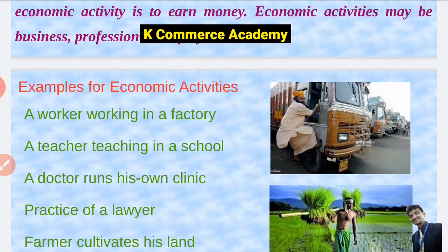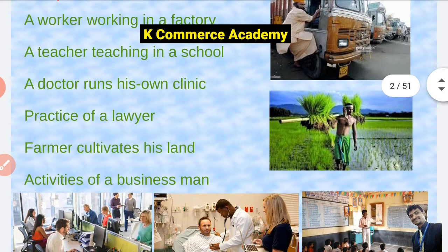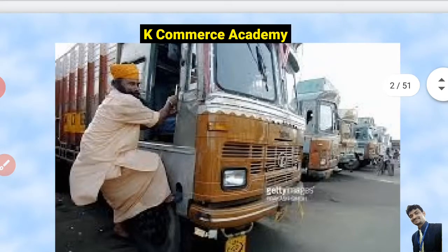Examples of economic activities: a worker working in a factory — economic activity. Salary is an economic activity. A doctor running his own clinic — economic activity. Jabb doctor apne clinic pe patients ko dekhega, uske baad usko fees earn hogi — economic activity. Practice of a lawyer — economic activity, fees milegi. Farmer cultivates his land, profit earn karega. Activities of a businessman — profit earn karega. Here a person doing a driver job is getting salary, so it is an economic activity.